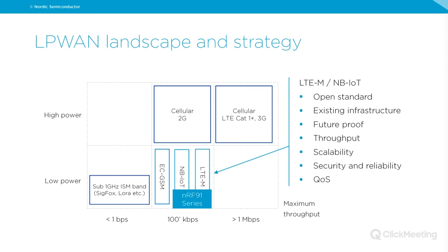These technologies provide enough throughput, and because there is large existing infrastructure — all the base stations and cellular towers are already there — they offer a very scalable solution, whether you have a few devices or thousands. Security and reliability are built into these well-proven technologies. They also offer quality of service because they operate in licensed bands where interference is managed.